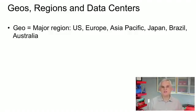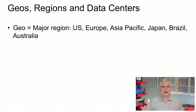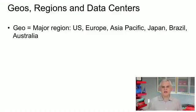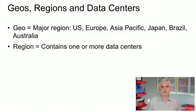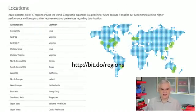A geo is a major region — including the United States, Europe, Asia Pacific, Japan. I'm not sure, but I think they have changed the name of that to Southeast Asia. Another geo is Brazil, and the newest one I think is Australia. Each geo can contain one or more regions. If you take a look at the marketing page on the Azure website — I've posted a link on screen — you can see that at the bottom it gives a list of the locations.